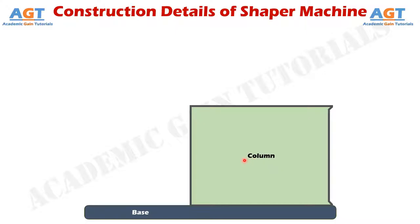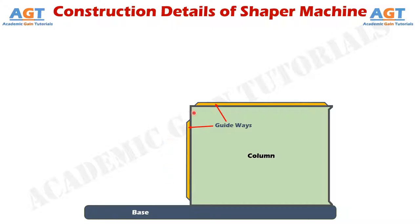On the side of the column and above it, there are two guideways attached. The guideway on the side guides the work table in reciprocating movement up and down. The guideway above the column guides the ram of the shaper machine in reciprocating movement forward and backward.